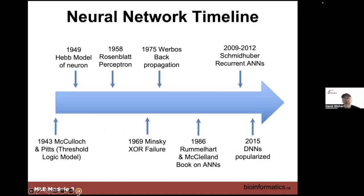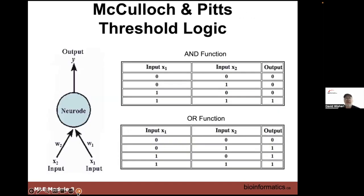Neural networks didn't really begin in 1986 — the concepts started showing up in 1943 with McCulloch and Pitts, and then other models emerged from 1949, 1958, 1969, 1975. The McCulloch and Pitts model was the main concept — about 90% of the way towards what an artificial neural net is. They called things 'neurodes' rather than nodes, but neurons in a node.